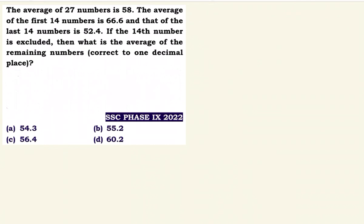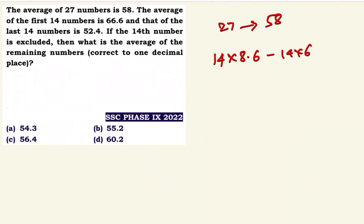So 27 numbers average is 58. The first 14 numbers average is 66.6, which is a deviation of plus 8.6 from 58. The last 14 numbers average is 52.4, so 58 minus 52.4 is equal to 5.6. Minus 14 into 6.6... the deviations are 8.6 and 5.6.